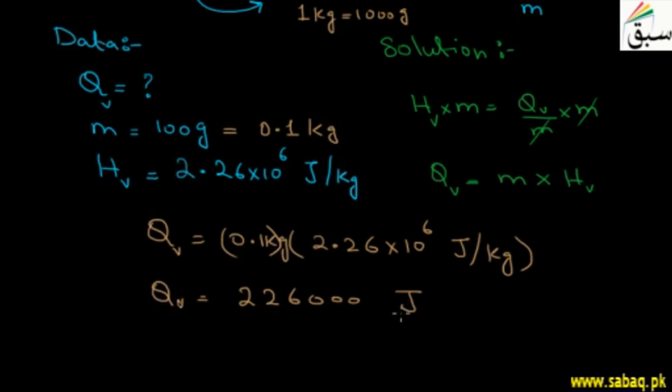Now students, we can write it in the form of scientific notation. Since you're not looking at the decimal point here, it's at the end. We need to move the point to after the first non-zero digit, so 2.26.